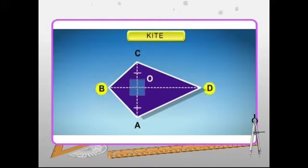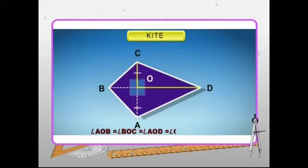The longer diagonal of a kite bisects the other diagonal at right angles. In the figure, longer diagonal BD bisects the other diagonal AC at right angles. Hence AO is equal to OC. Also, angle AOB is equal to angle BOC, which is equal to angle AOD, which is equal to angle COD, and each one is equal to 90 degrees.